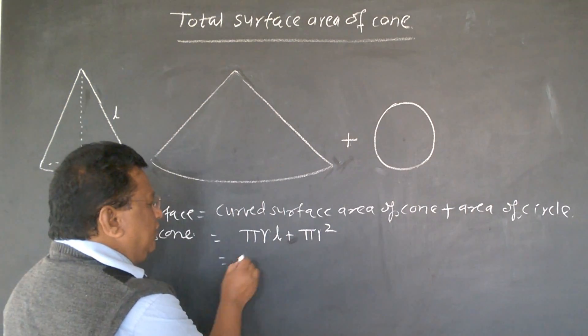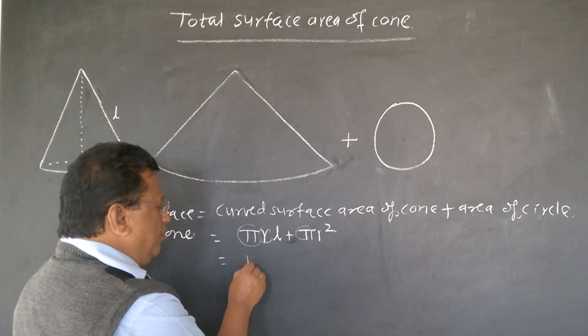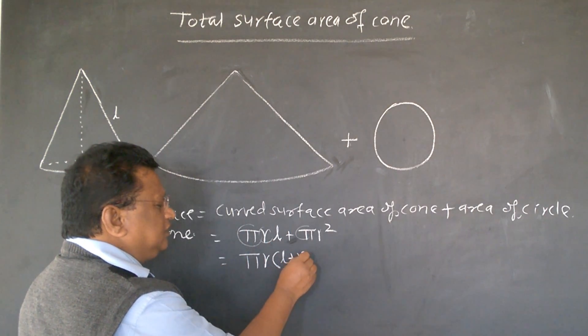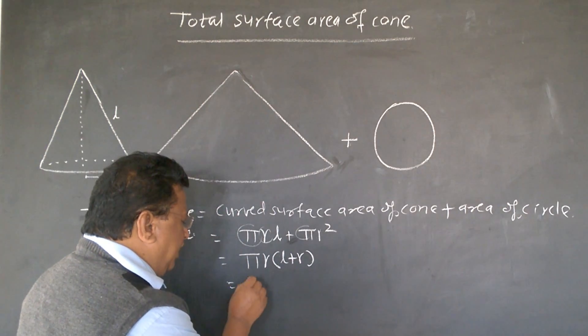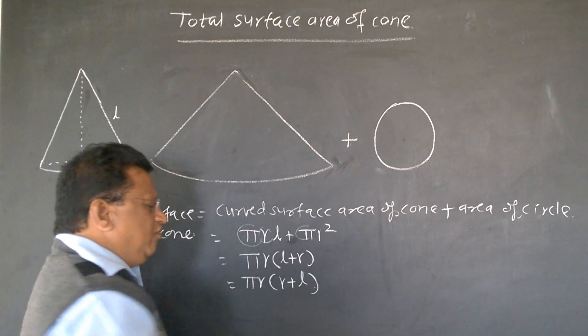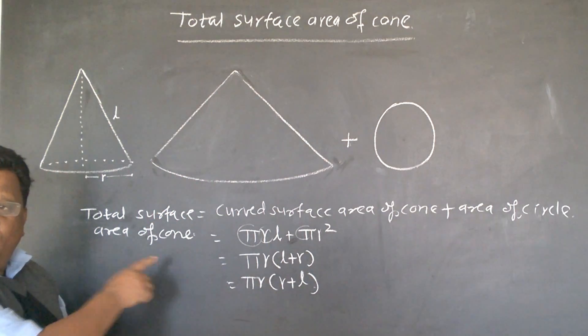Let's take pi r as a common. So, pi r what remain here? l plus r. So, this is the formula pi r times r plus l for total surface area of cone.